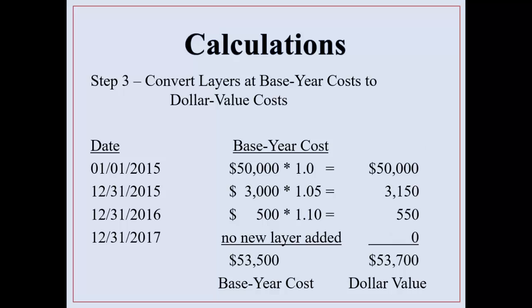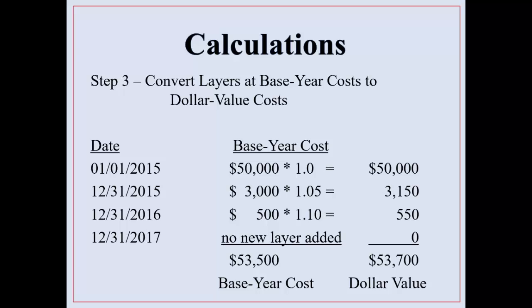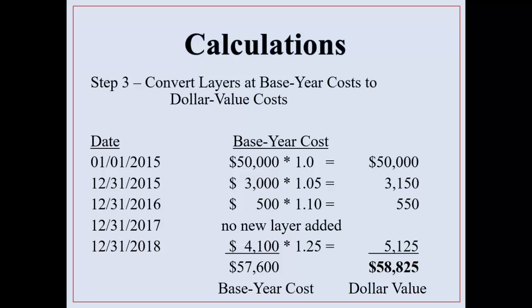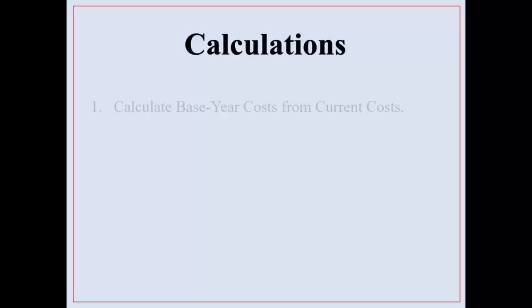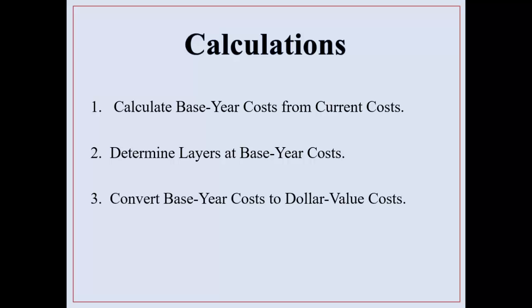This is called dollar value LIFO. To review: number one, calculate base year cost from your current cost — take away the effects of inflation to determine what your actual layers are at base year so you are comparing apples to apples. Then convert the base year cost back to dollar value using the cost indices. And that is dollar value LIFO.